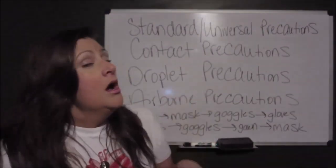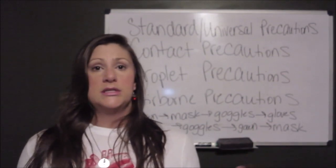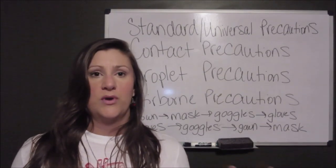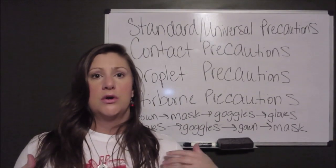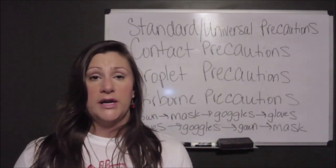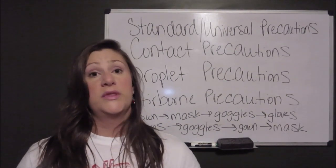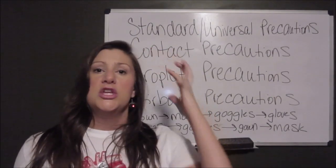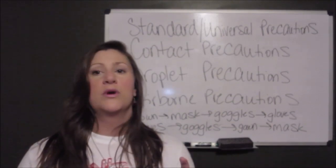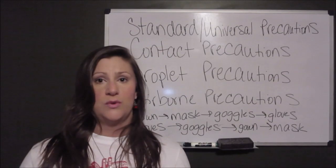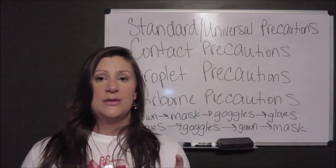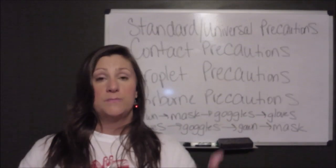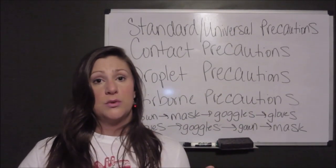The final level is airborne precautions. Airborne precautions differ from droplet precautions in that the droplets are able to survive the drying-out process. Airborne illnesses are still transmitted through coughing, sneezing, and talking; however, those droplets, when they dry out, survive. Airborne precautions are unique in that you have to wear a special N95 respirator — not just a surgical mask. The patient also has to be placed in a negative pressure room, which continuously changes out the air within the room, and the door must remain shut at all times.